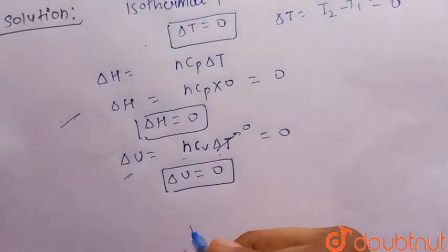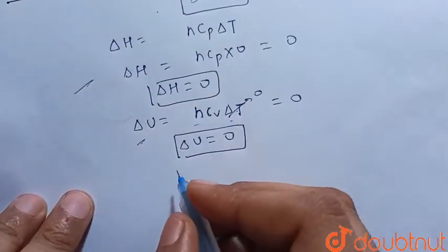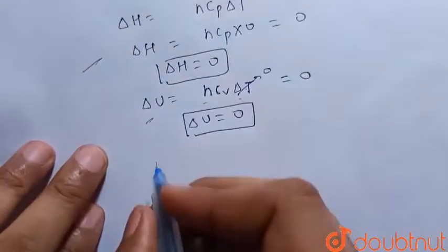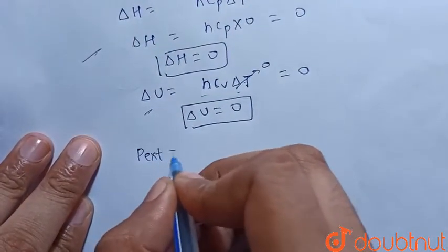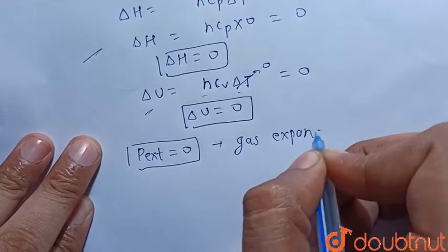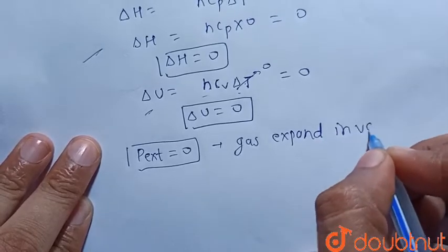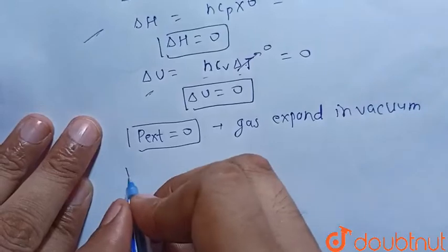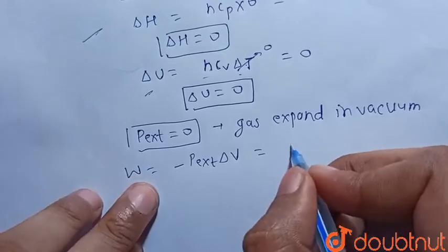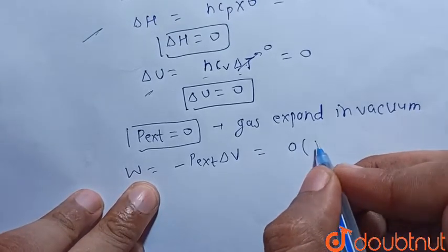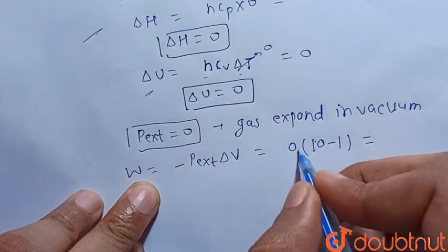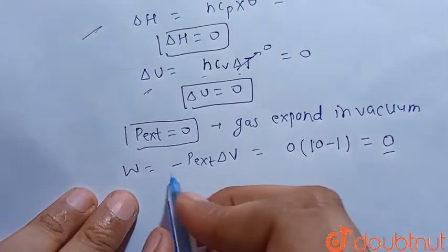The change in internal energy is also 0. Since the ideal gas expands in vacuum, the external pressure P_external = 0. We know that W = −P_external × delta V. Here P_external = 0, and delta V = V2 − V1 = 10 − 1 = 9 litres. So W = 0 × 9 = 0. Hence W is also equal to 0.